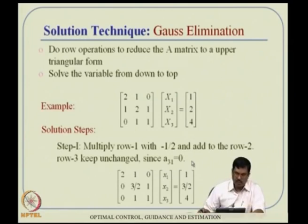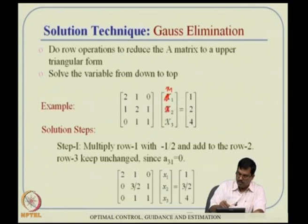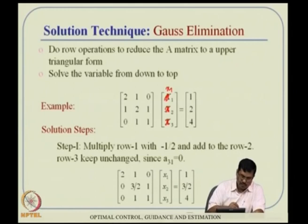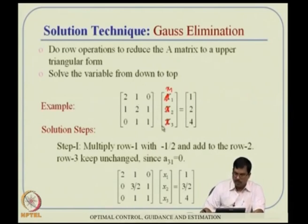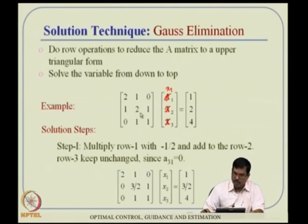Gaussian elimination is a substitute. Taking a 3×3 example, we have variables x1, x2, x3. The goal is to reduce the A matrix to upper triangular form. We exploit the property that multiplying any row by a constant and adding or subtracting from another row does not change the equations. So we make the lower-triangular elements zero through row operations.